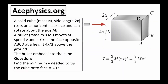Here's the final problem, number four. A solid cube of mass M and side length 2x rests on a horizontal surface and can rotate about axis AB. A bullet of mass m, much smaller than M, moves at speed v and strikes the cube at a distance 4x over 3 from the bottom. The bullet embeds into the cube. Find the minimum speed v needed to tip the cube onto its face. The moment of inertia of a cube is two-thirds mL squared, and since the side length is 2x, our cube has moment of inertia equal to eight-thirds Mx squared.